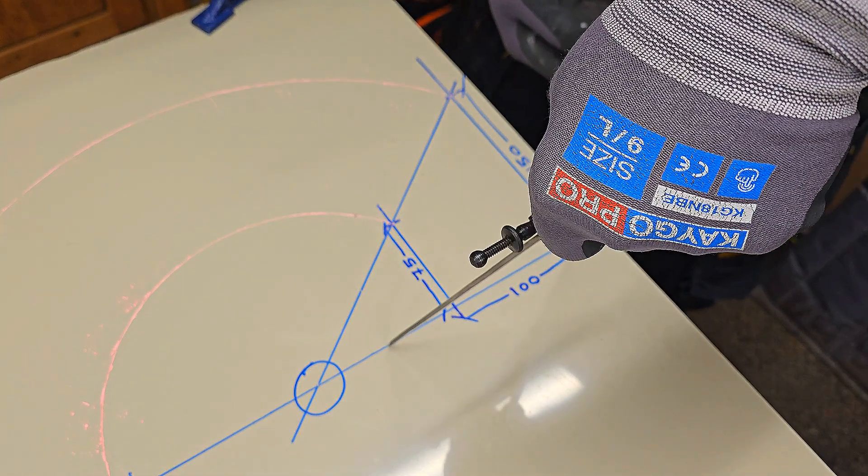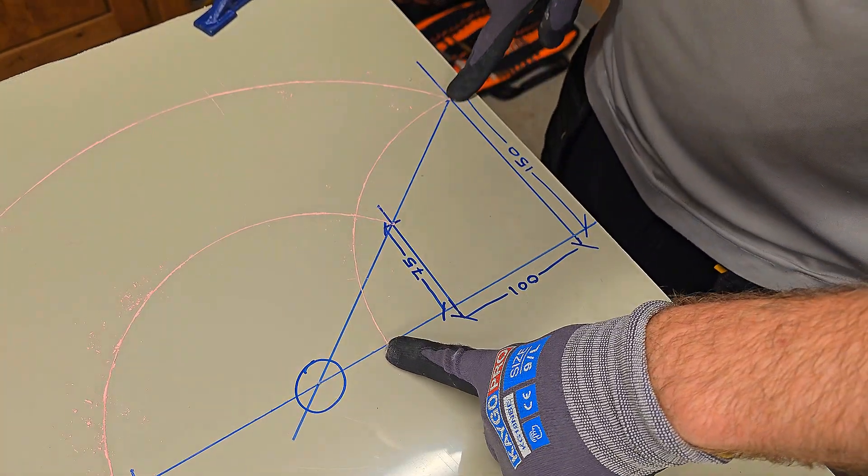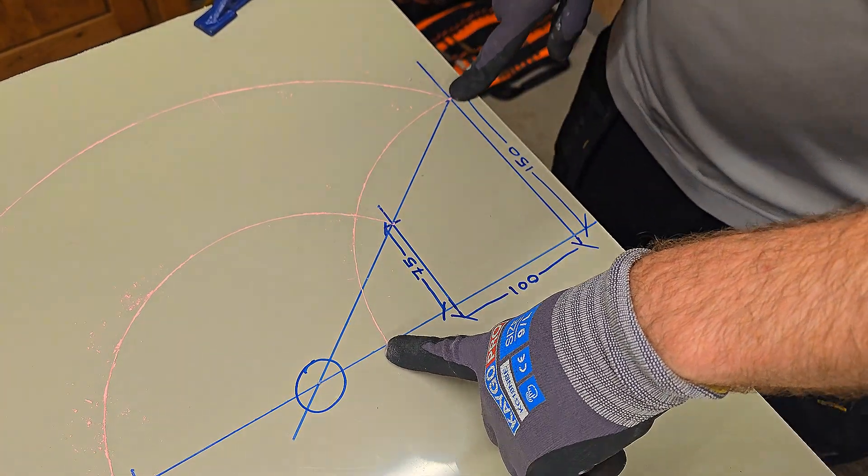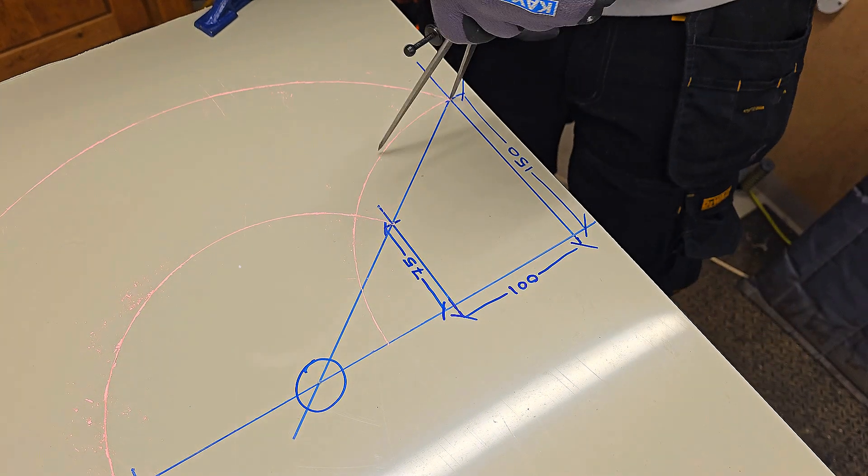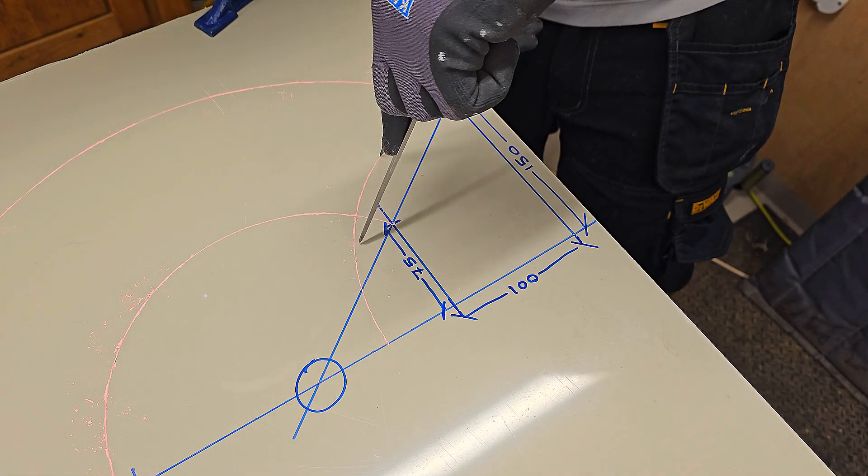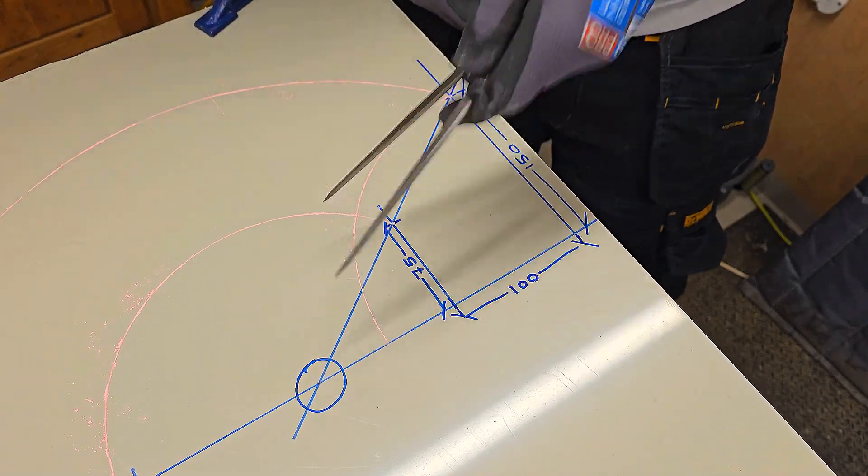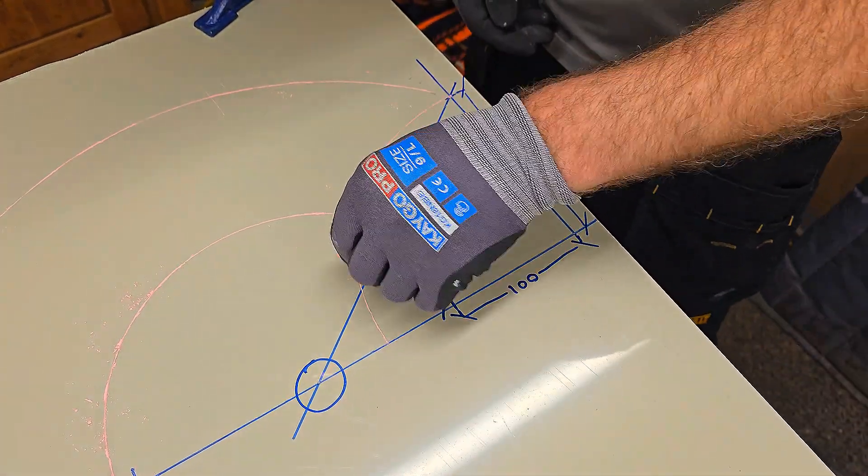This scribe line is exactly a quarter circumference of the cone. We can now divide it into three equal parts. If a quarter of the circumference has three equal spaces, then the full circumference will have 12 equal spaces.